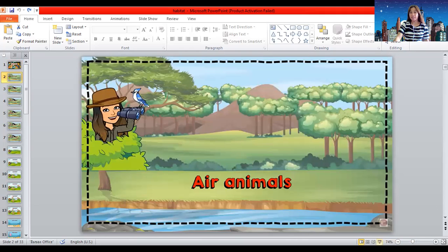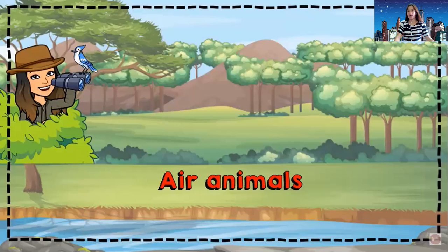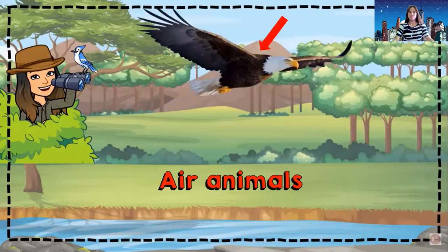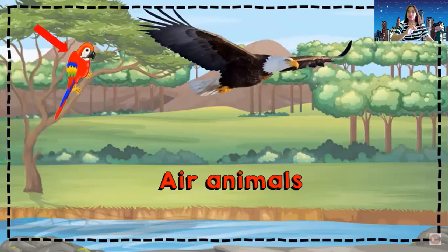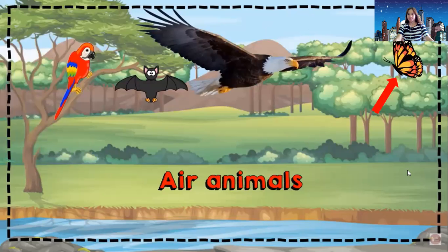Let's start with animals that live in the air, or we call them air animals. What are those animals that live in the air? It's an eagle — yes, eagle's habitat is in the air, they live in the air. How about this one? A parrot — okay, a parrot is also an air animal. A bat — yes, a bat is also an air animal. How about this? It's a butterfly — so a butterfly is also an air animal.